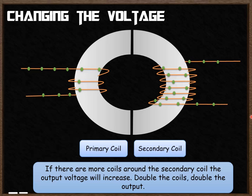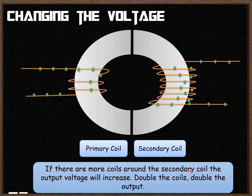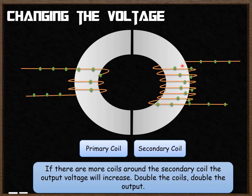The next thing to look at is how a transformer changes the voltage. Voltage comes into the primary coil and a voltage is then induced in the wire around the secondary coil. The voltage will be different from primary to secondary if there are more coils around the secondary coil — the output will increase. If you double the number of coils you double the output voltage, because there is more wire around the core, meaning more electrons are moved by the magnetic field, inducing a bigger output voltage.